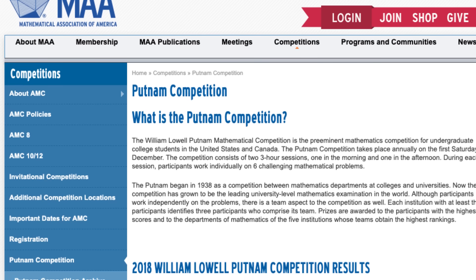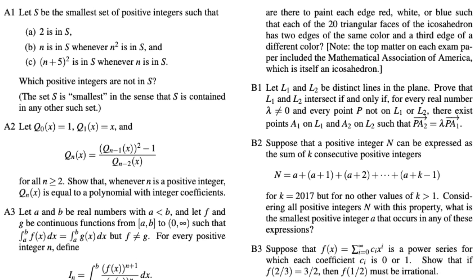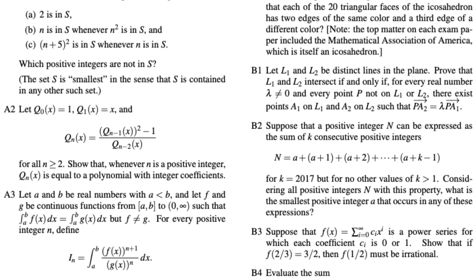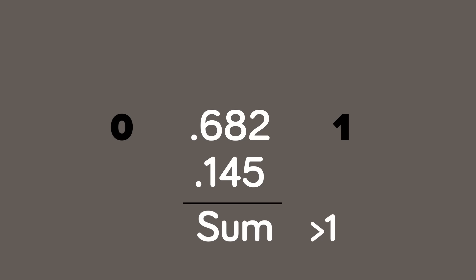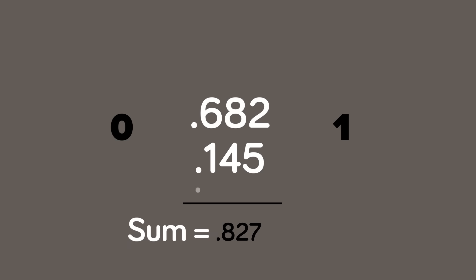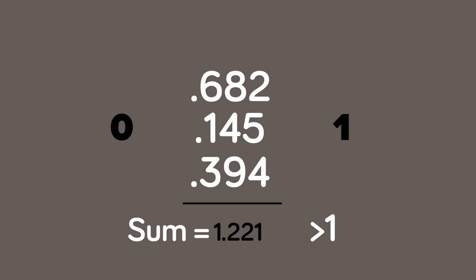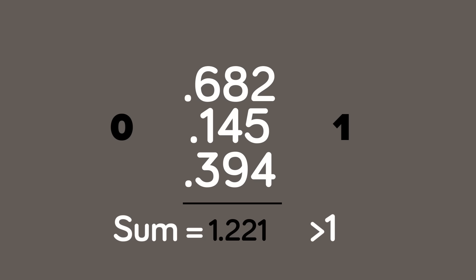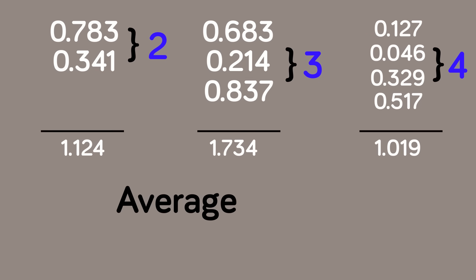This next example came up on an old Putnam exam — a university-level math competition with extremely difficult problems. Pick a random number between 0 and 1, say .682, then pick another, say .145, and keep going until the sum exceeds 1. So with .682 + .145 = .827, we need to keep going. If the next number is .394, the sum exceeds 1 and we stop — it took 3 numbers. If you do this with truly random numbers over and over, on average the amount of numbers you'd write down before the sum exceeds 1 is E.